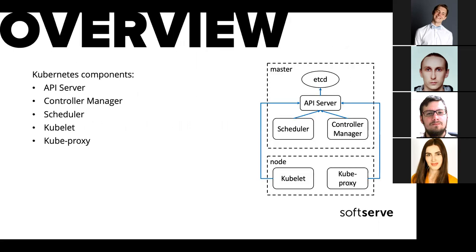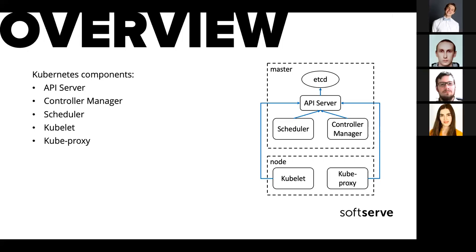Here is a brief overview of the main components. We have a master and a node. On the master we have the etcd database, and the second component is the API server. The API server is the gateway for all systems to the etcd database — no one else talks directly to etcd. So whenever you're trying to change the state of your system, you need to go through the API server, whether you're a human using kubectl, a scheduler trying to assign a pod, or a replication controller creating a new pod. Everything goes through the API server. The API server writes and manipulates the state in the etcd database.